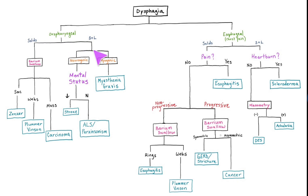For oropharyngeal dysphagia with trouble swallowing both solids and liquids, we suspect a motility disorder, possibly secondary to a neuromuscular disorder. For neurogenic causes, we can clinically observe the patient's mental status. If it is altered, we should evaluate for a hemorrhagic stroke by doing a head CT without contrast, or evaluate for an ischemic stroke with a brain MRI. If the mental status is normal, we can clinically look for signs of ALS, which is a disorder affecting the upper motor neurons and lower motor neurons, or we can look for symptoms of Parkinsonism.